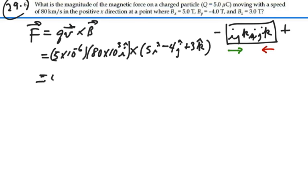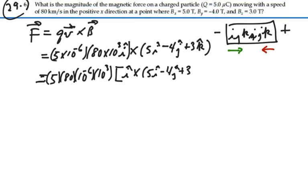So we have 5 times 80, 10 to the minus 6 times 10 to the 3, and we're left with I crossed with 5I minus 4J plus 3K. So this is going to be 5 times 80 is 400, times 10 to the minus 3, so that'll be 0.4 is left from all that. And then I cross I will give me 0.